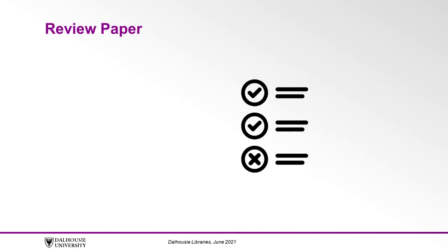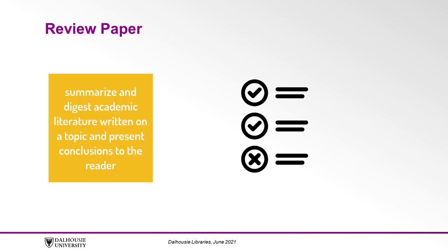The second kind of research paper is the review paper. A review paper aims to summarize and digest academic literature written on a topic and present conclusions to the reader.